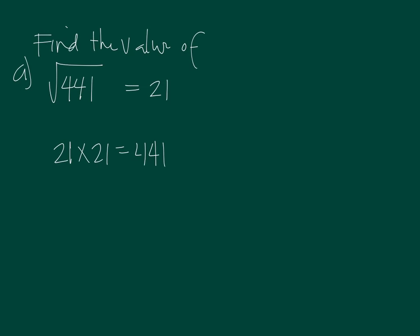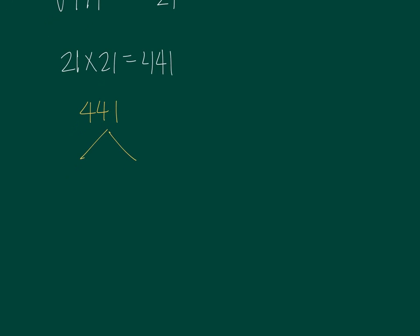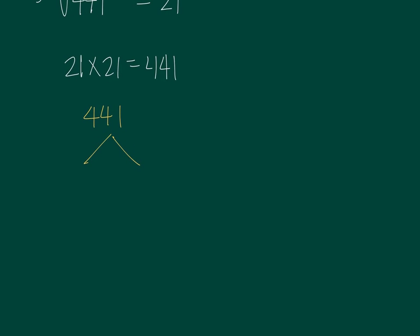So what is another method introduced to you? Since we are learning prime factorization, we could actually use prime factorization to get the square root of 441. So you apply what you have learned in number 2. How do we break down 441? By 3. We divide it by 3. So if we divide it by 3, what will you get?